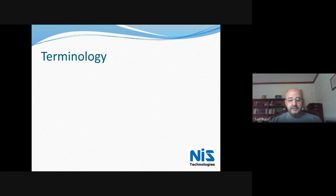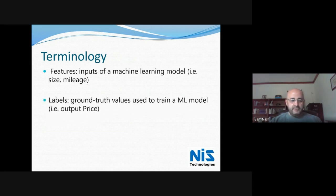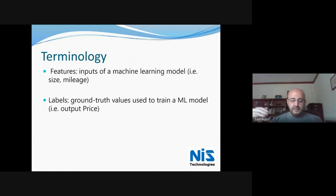Some terminology to keep us all on the same page. A feature is the input of a machine learning model — things like the size of a home in square footage or mileage for a vehicle. The label is the output value, such as price. For example, if we specify a 1,000 square foot home, we give it a label of $100,000. A 2,000 square foot home would be $200,000. Likewise, with cars, mileage and price are inversely proportional — as mileage goes up, the price of the vehicle goes down. A transform is the type of prediction the model will be making.